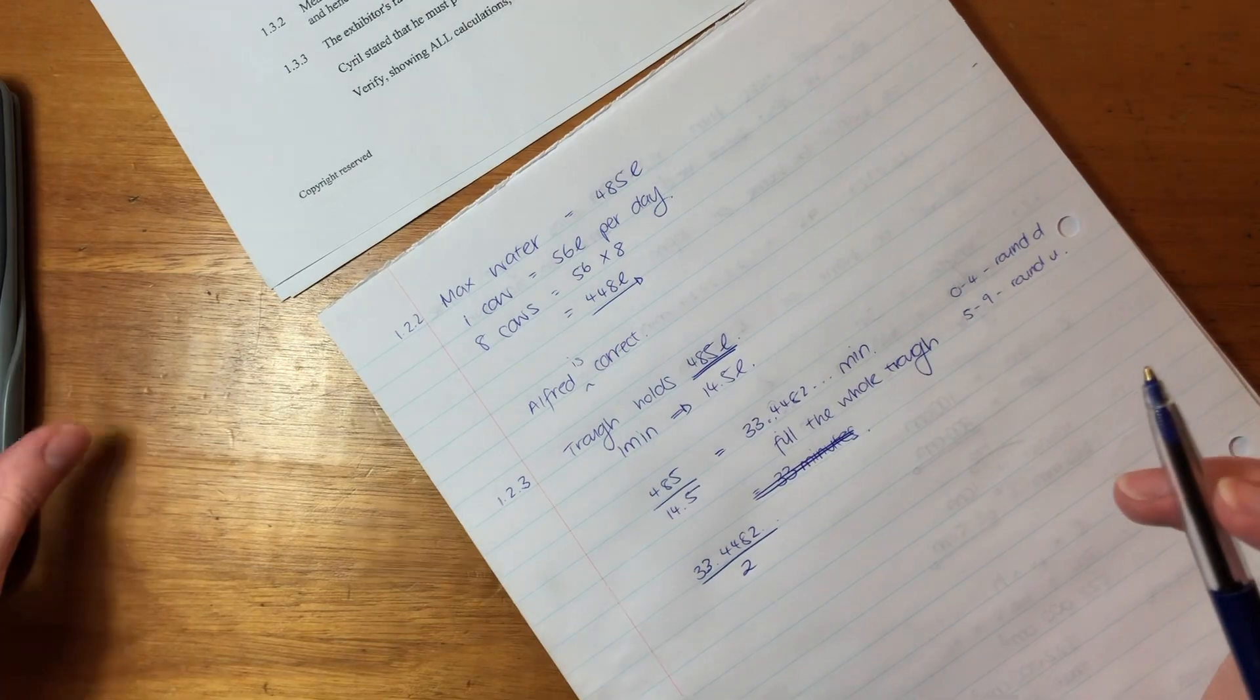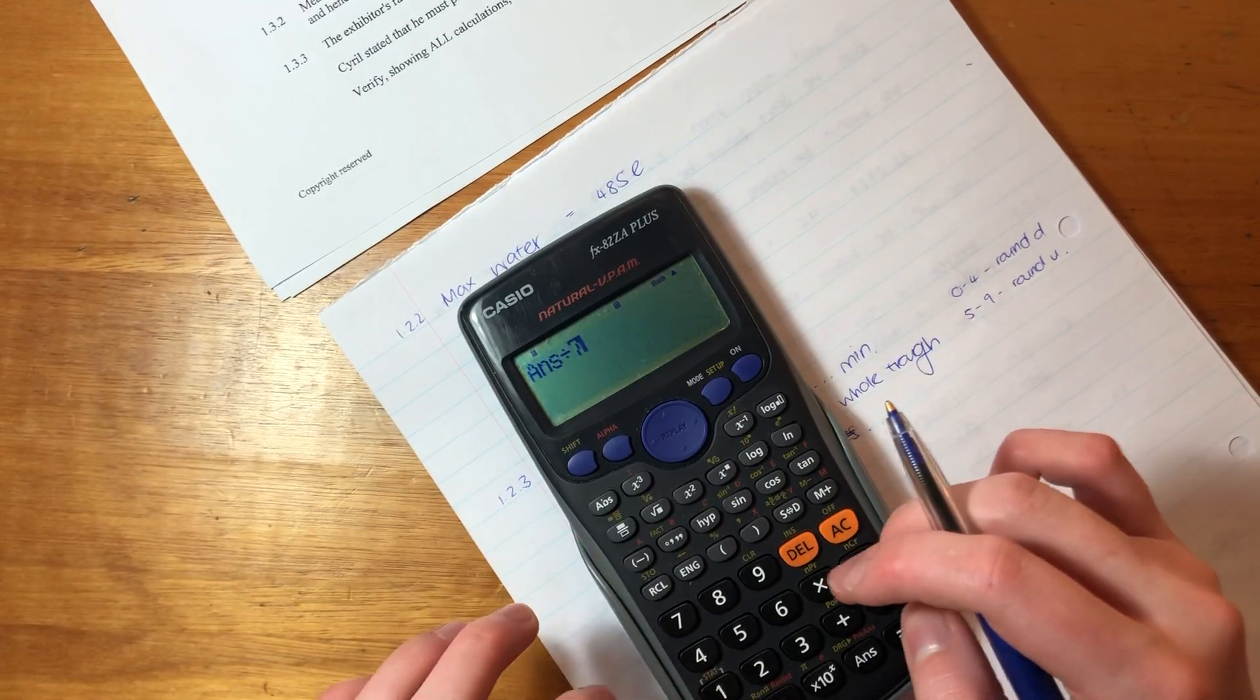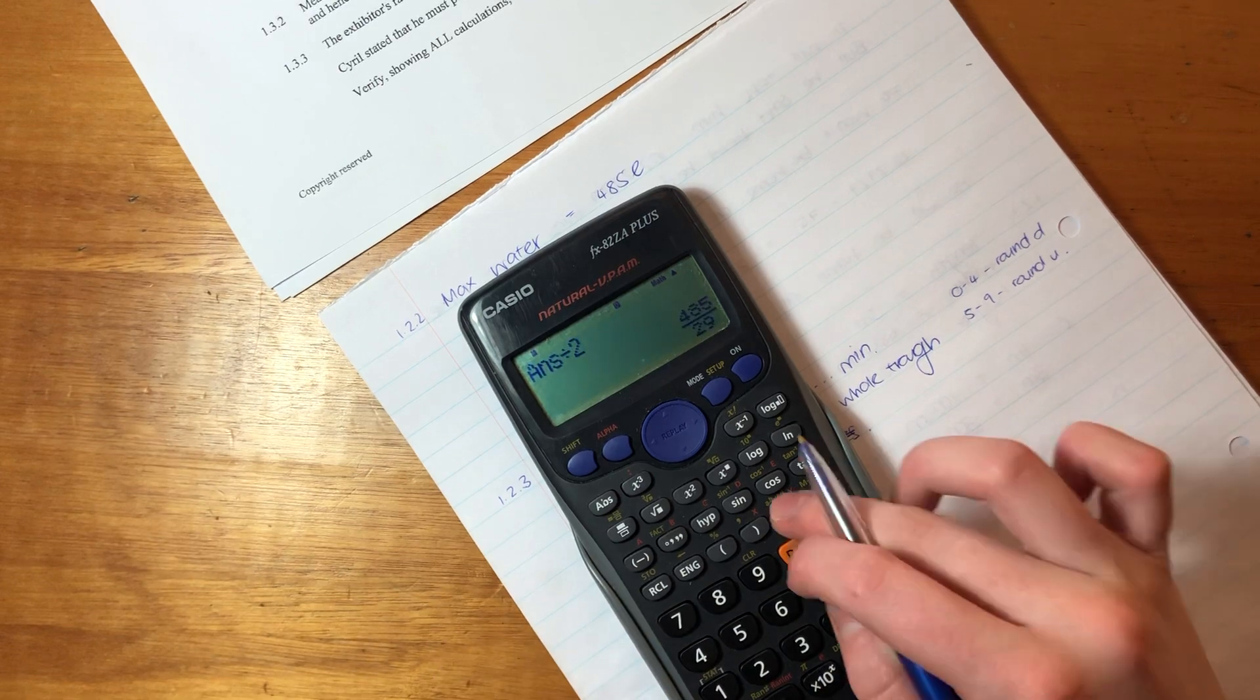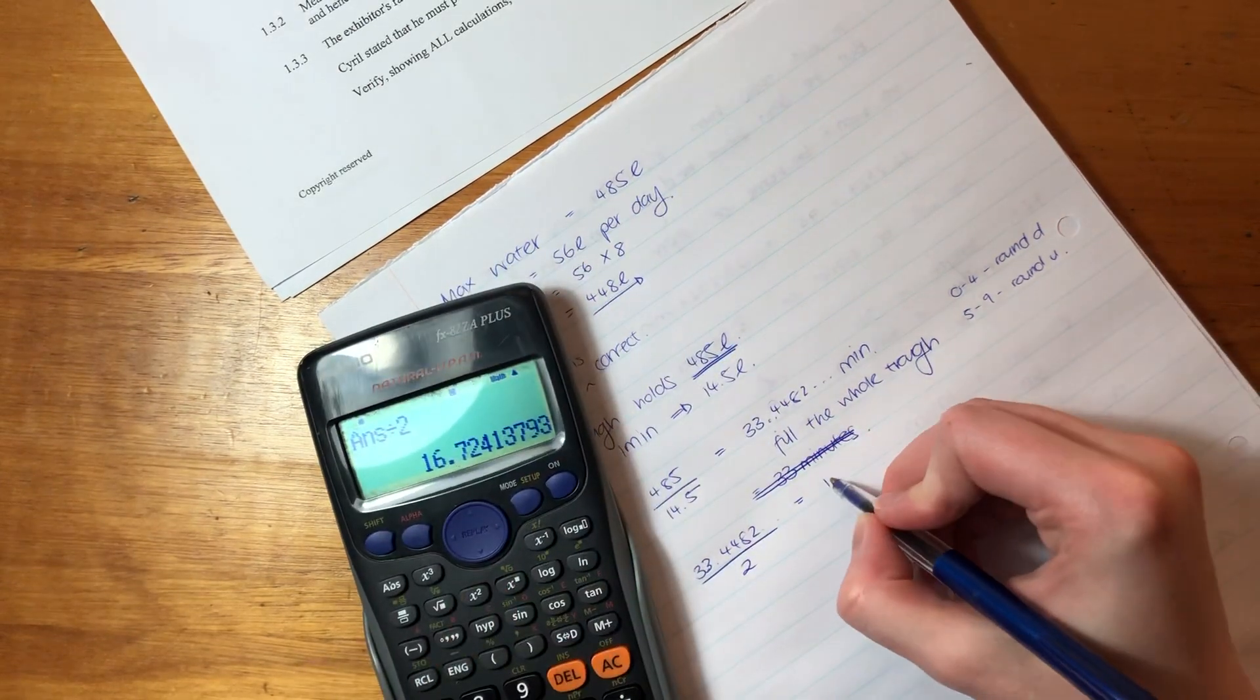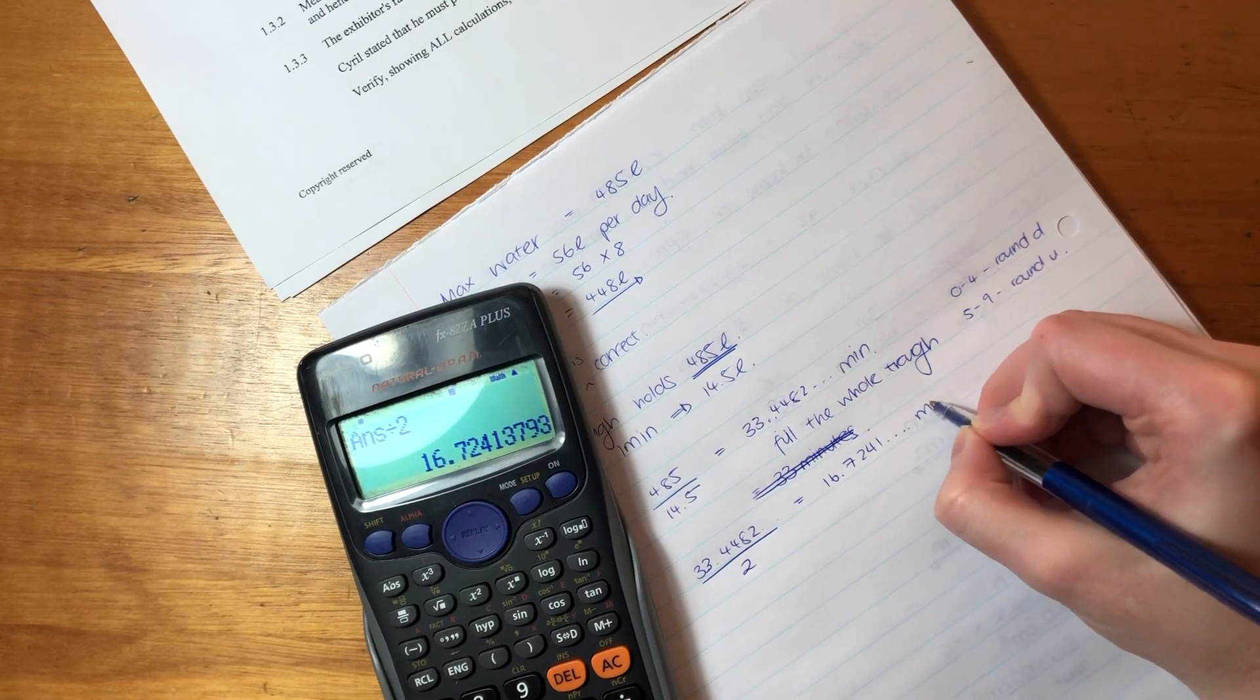So when you divide that by 2, not by 7, by 2, you get 16.7241 minutes.